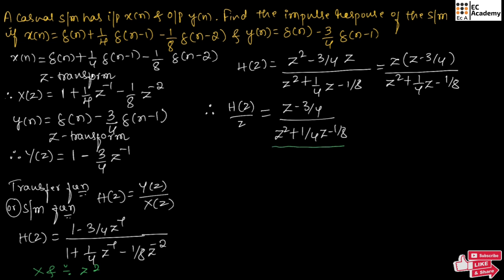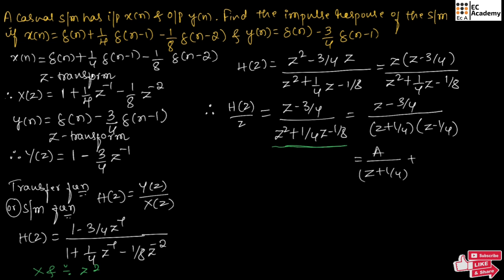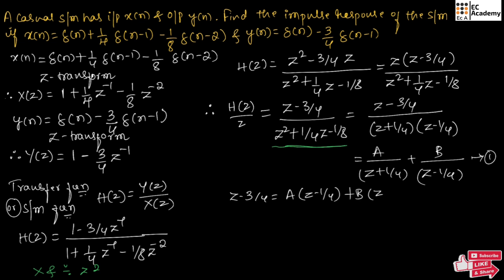Now if we find the roots of the denominator, we can write the equation as [z minus 3/4] divided by [(z plus 1/2)(z minus 1/4)]. Using partial fractions, we write this as A/(z plus 1/2) plus B/(z minus 1/4). Let us call this equation number 1. We can rewrite equation 1 as: z minus 3/4 equals A(z minus 1/4) plus B(z minus 1/2). Let us call this equation number 2.